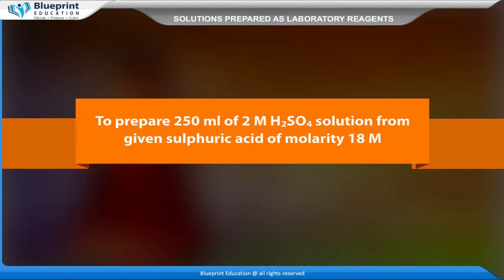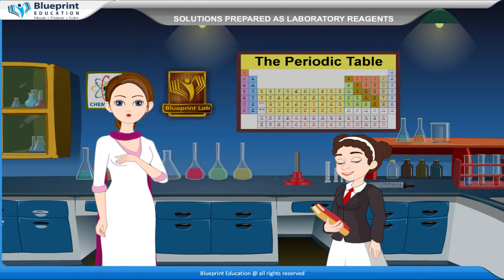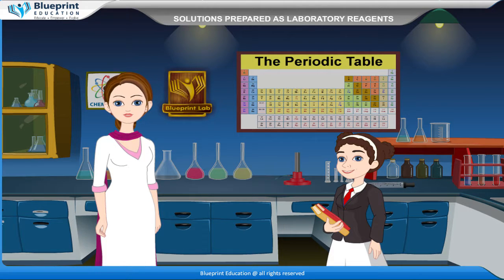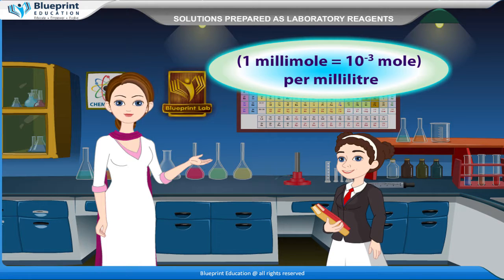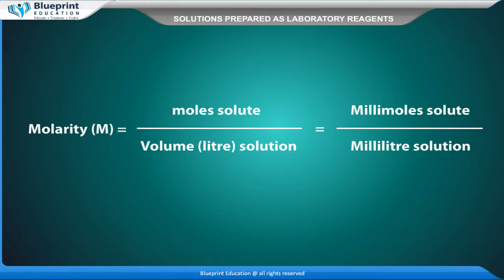To prepare 250 ml of 2M H2SO4 solution from given sulphuric acid of molarity 18M. The concentration of a solution may be stated as molarity M, which is the number of moles of solute per litre of solution, or the number of millimoles per milliliter of solution (1 millimole = 10⁻³ mol). Molarity M = moles of solute / volume in litres = millimoles of solute / volume in millilitres.